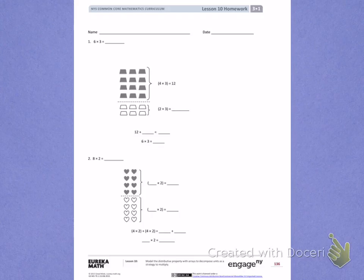Number 1, I need to solve 6 times 3. To do this, I have broken apart an array that also shows 6 times 3 into 4 times 3 equals 12 and a 2 times 3.